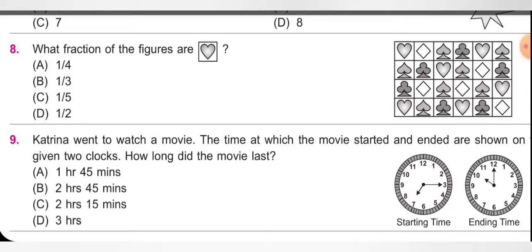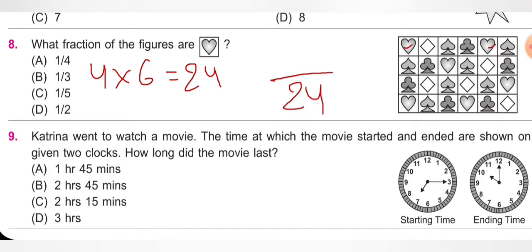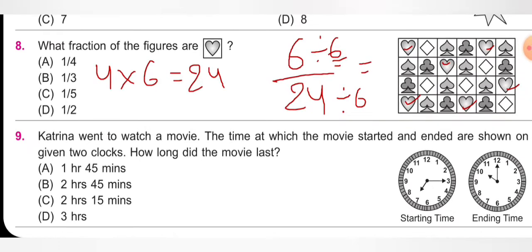Next question: what fraction of the figure is shaded? Count total squares: 4 rows × 6 columns = 24. Denominator = 24. Count shaded squares: 1, 2, 3, 4, 5, 6. Numerator = 6. Fraction = 6/24. Simplify by dividing by 6: = 1/4. Option A is correct.